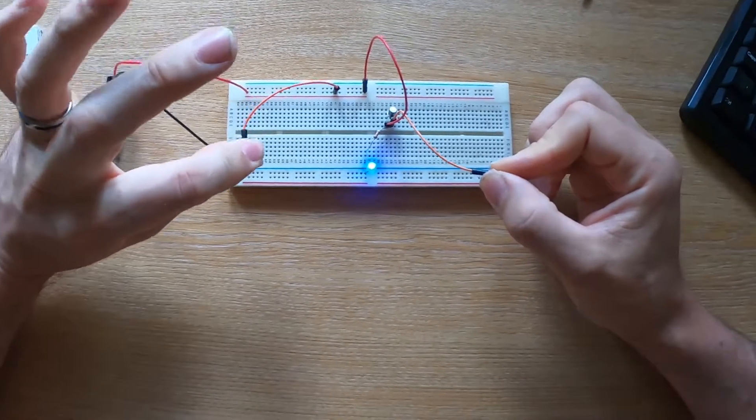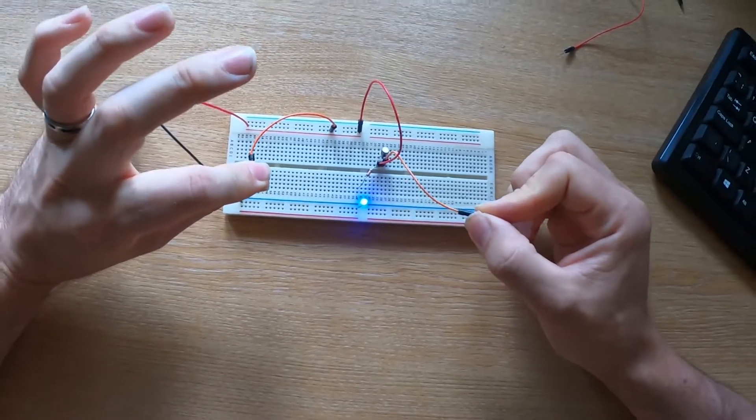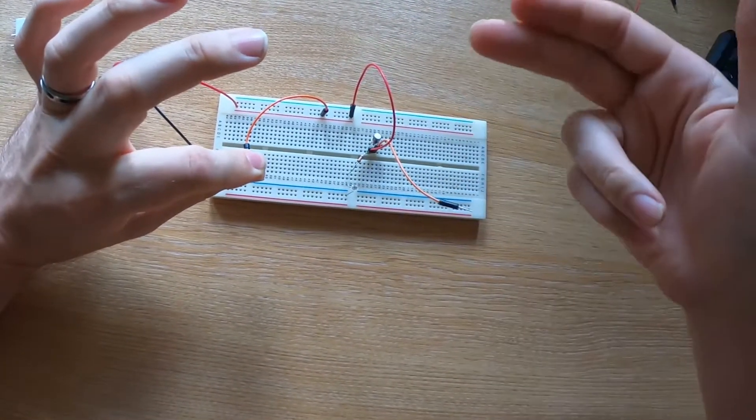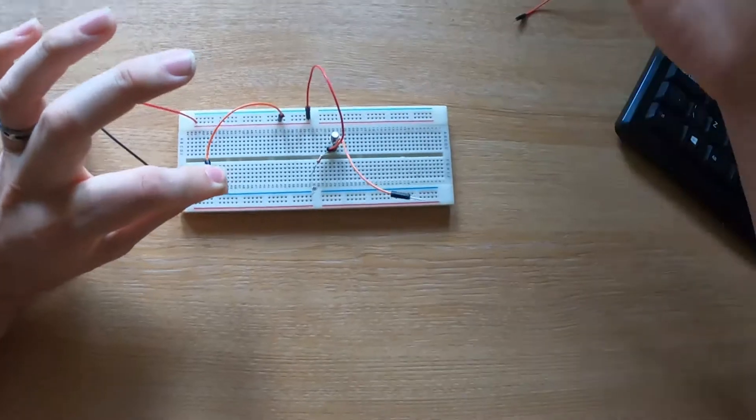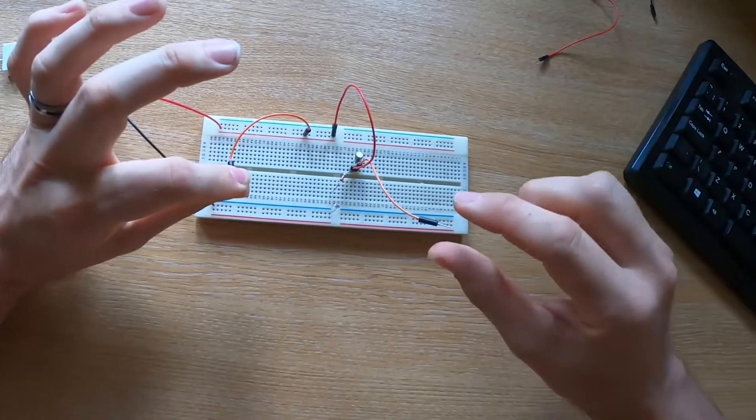And you can see that the light comes on. Now that's passing the current from the 9V battery through my body, back to the base of the transistor, which is allowing the current to flow through the transistor from the collector to the emitter or emitter to collector, depending on how you want to think about it, and then through the LED.